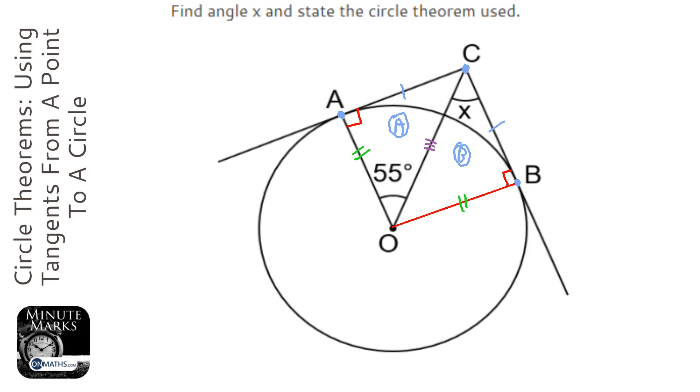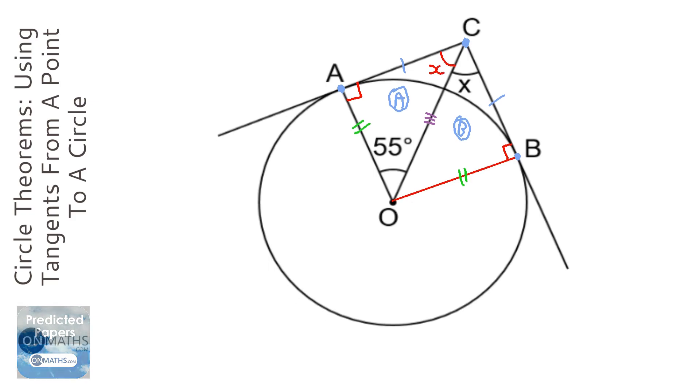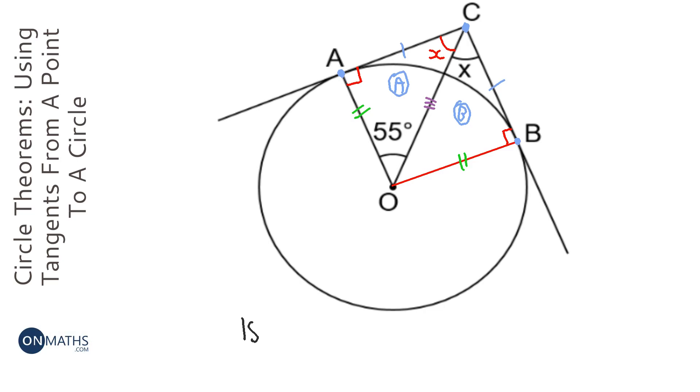This means that this angle here is actually x as well. Those two angles are equal. Therefore, to answer this question is very easy. You just do 180 take away, and then the 90 degrees.